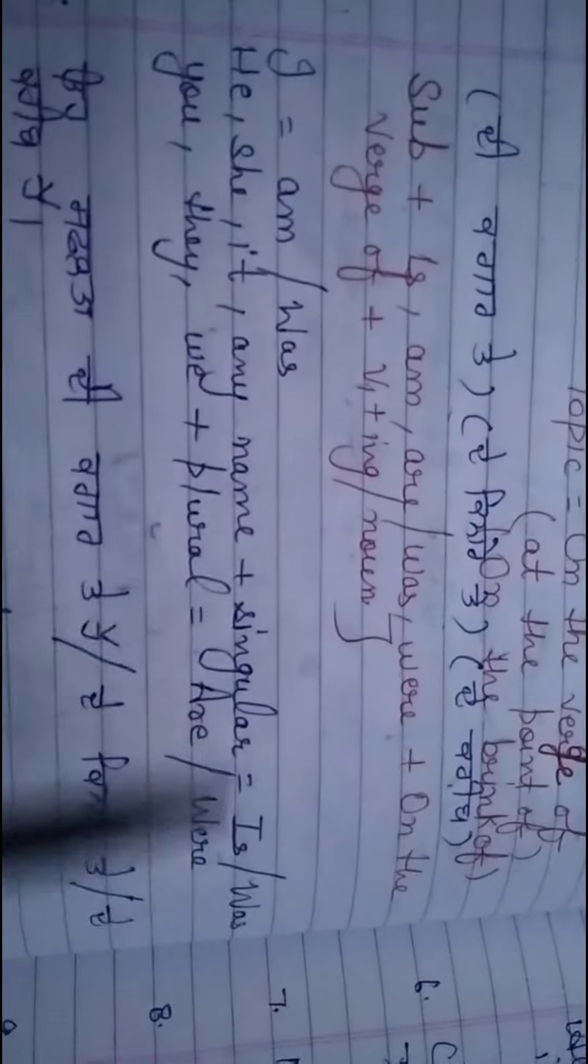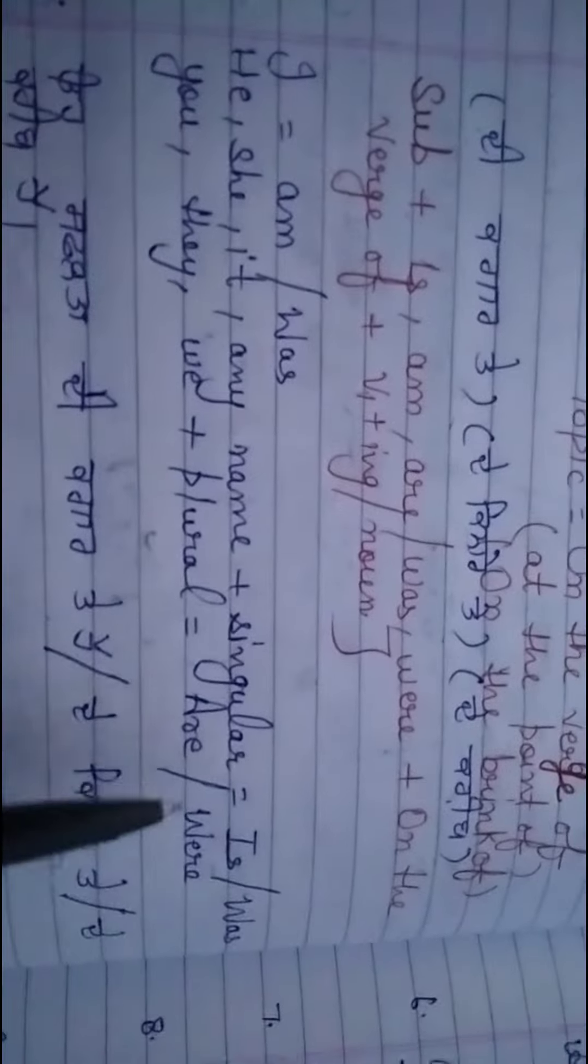And for past tense, we use 'was' with I, he, she, or any singular name. And 'were' is used with you, they, we, or any plural.